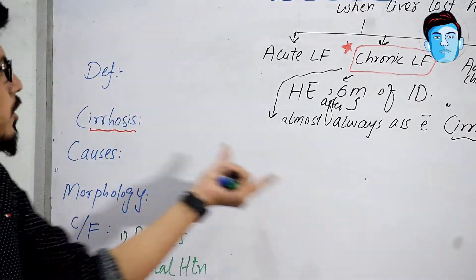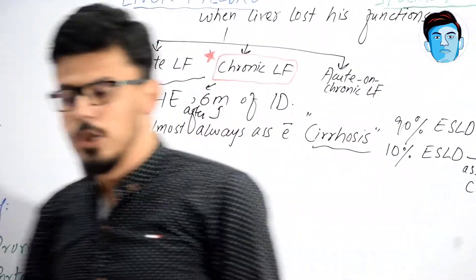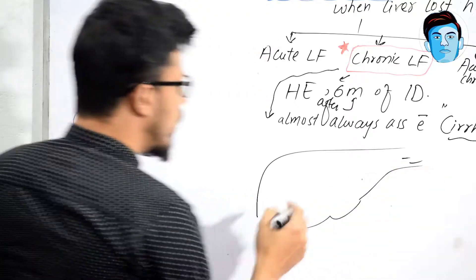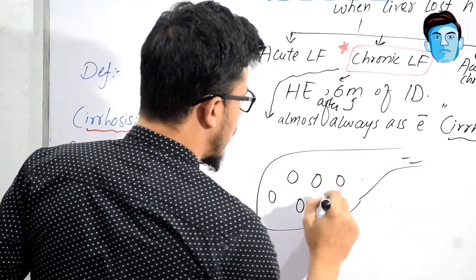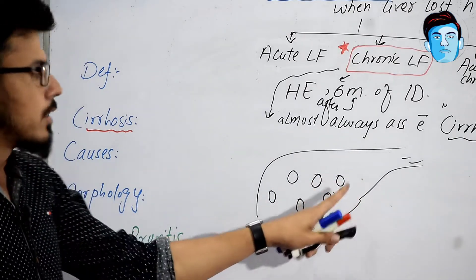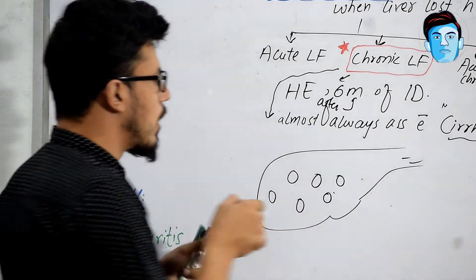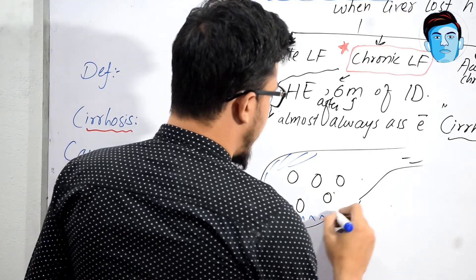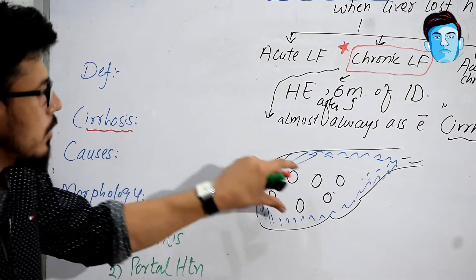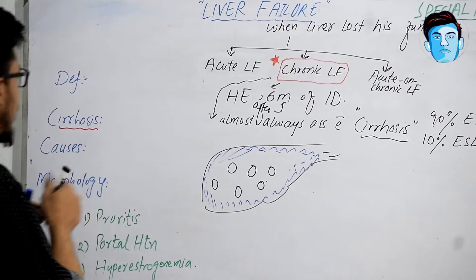You can easily appreciate the difference between a cirrhotic liver and a normal liver. In the cirrhotic liver, there will always be nodules present. If this is a liver, there will always be nodules present, and as you know, hepatocytes are also present. But in cirrhosis, there will be a lot of nodules surrounded by a lot of fibrotic tissue. How do you define cirrhosis?